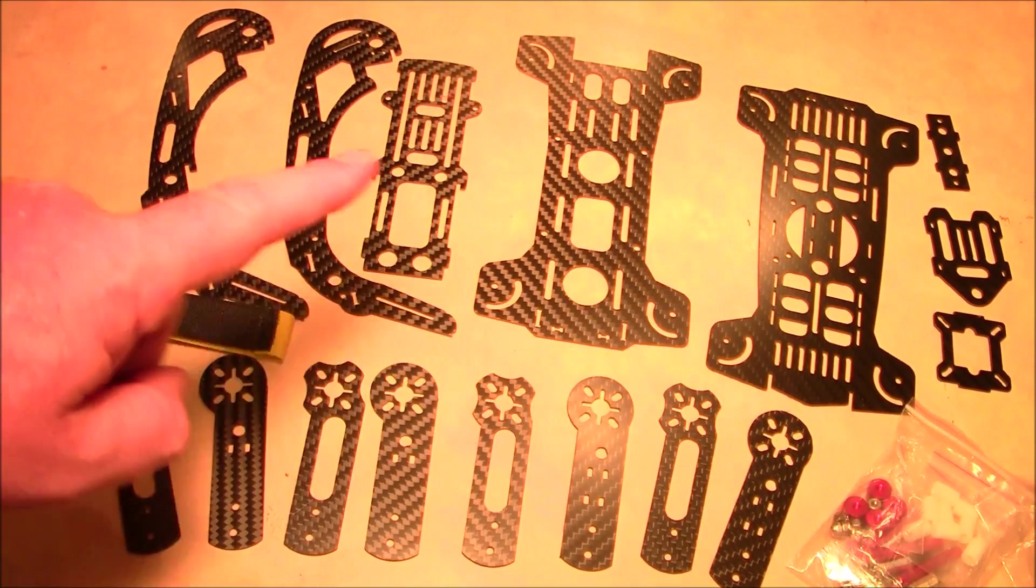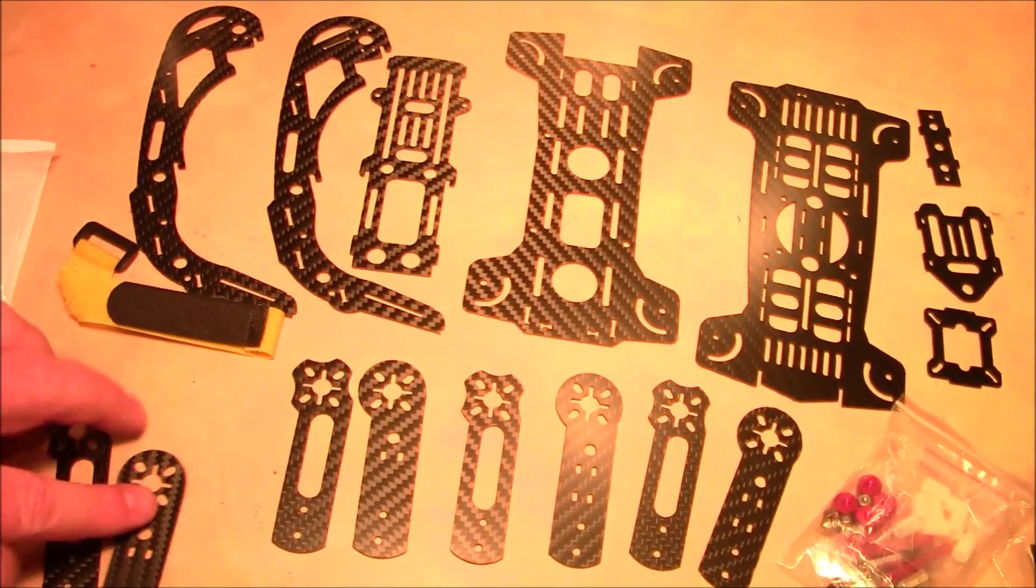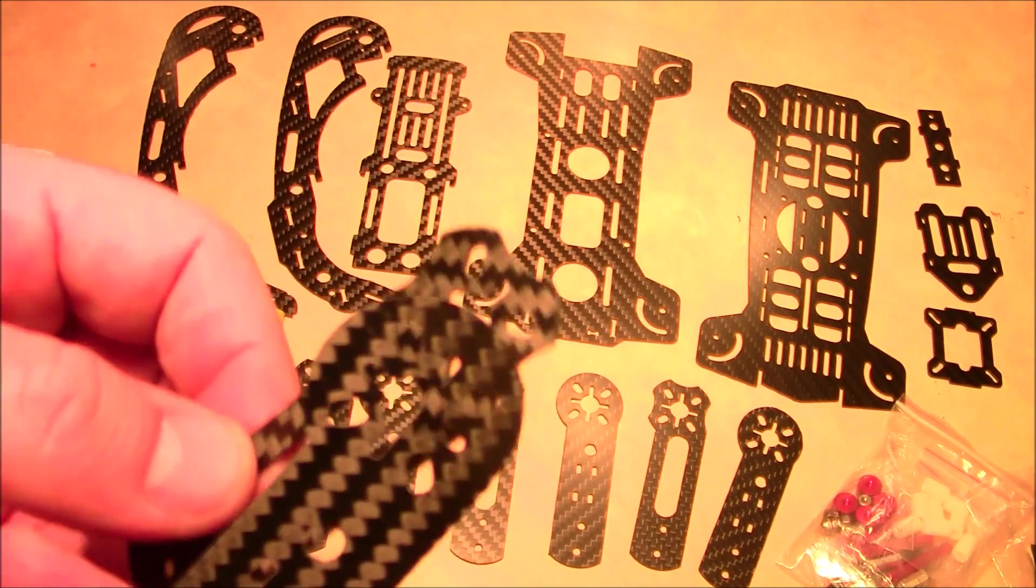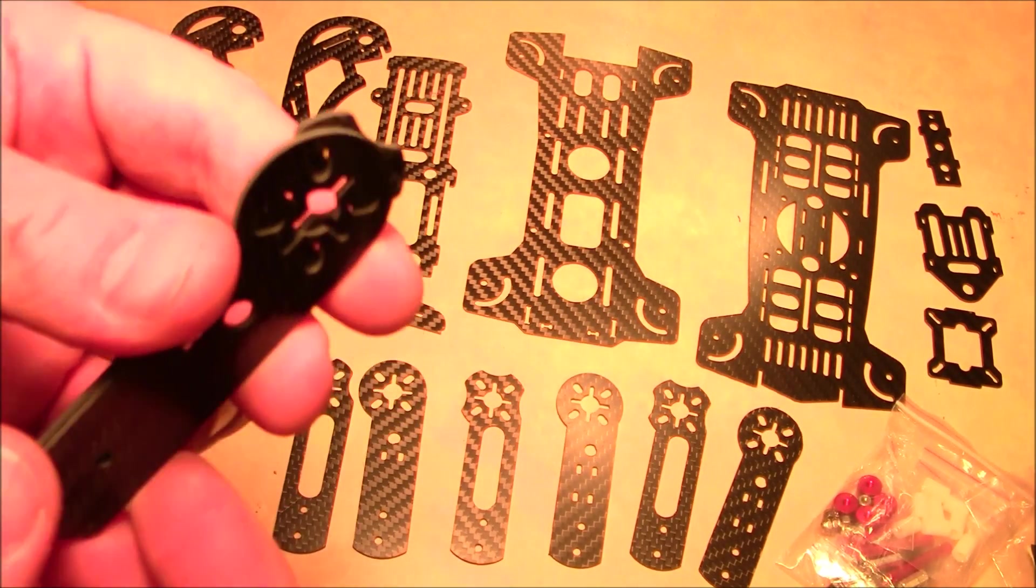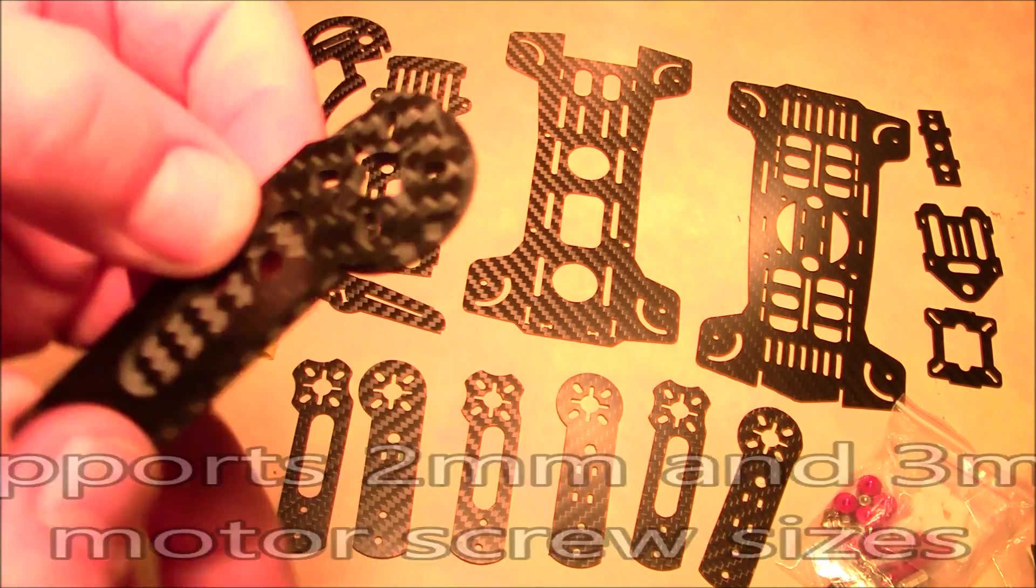Of course it has all the plates, and here are the arms. The arms are actually made up of two parts - it has the upper part of the arm and a lower plate of the arm. These actually hold together like this to make the arm a little bit stronger.